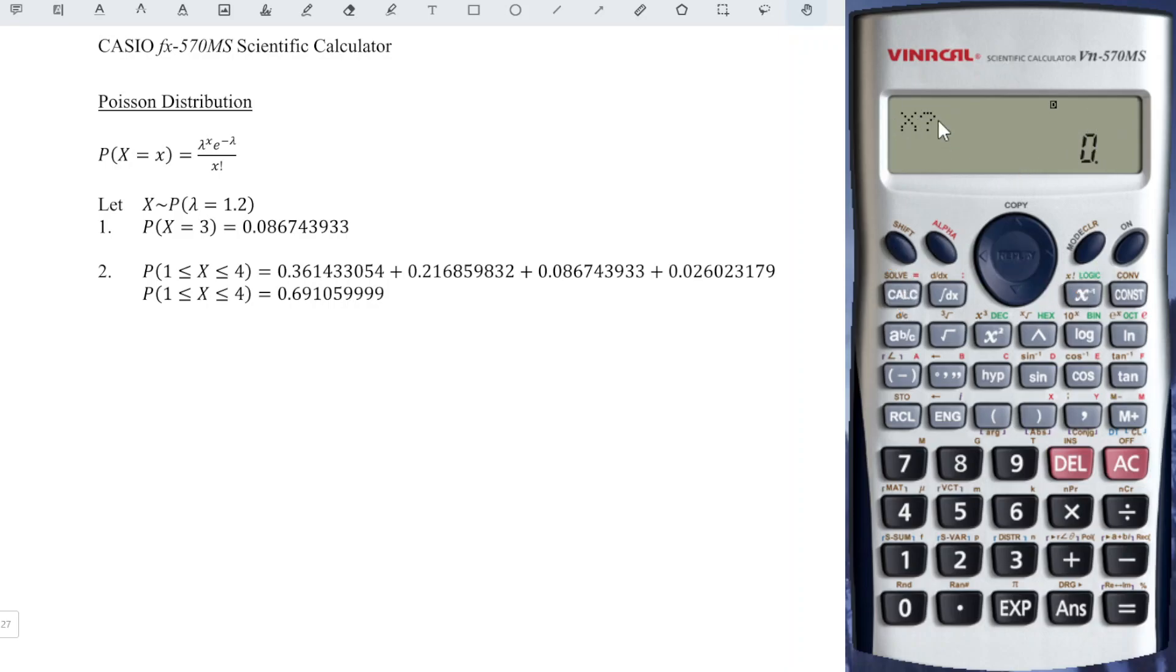Then we press calculate. The calculator will ask for x value. Then we check the question. The question asks for 3, so we key in 3 and press equal. Then we will obtain the correct probability.